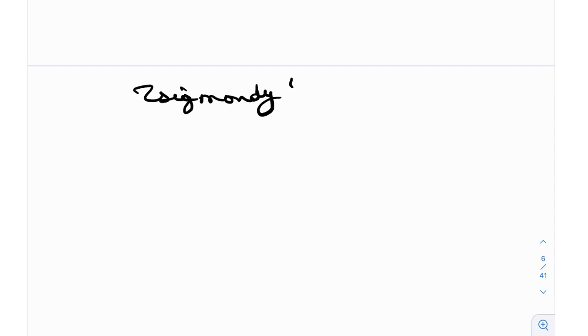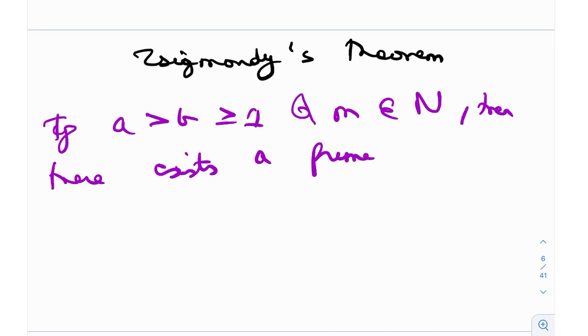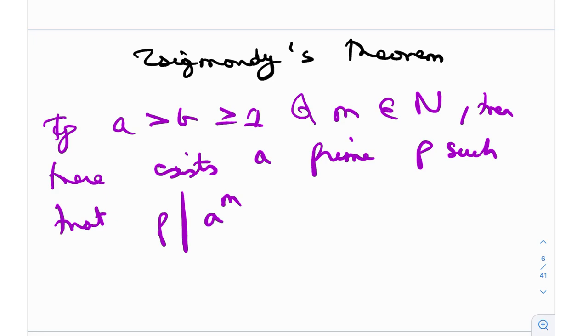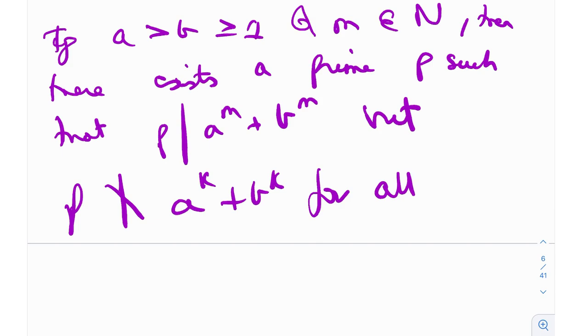For those who have studied p-adic valuations or the Lifting the Exponent lemma, this is like an advanced version of that. What does it state? If a > b ≥ 1 and m is a natural number, then there exists a prime p such that p divides a^m + b^m, but p does not divide a^k + b^k for all k less than m.